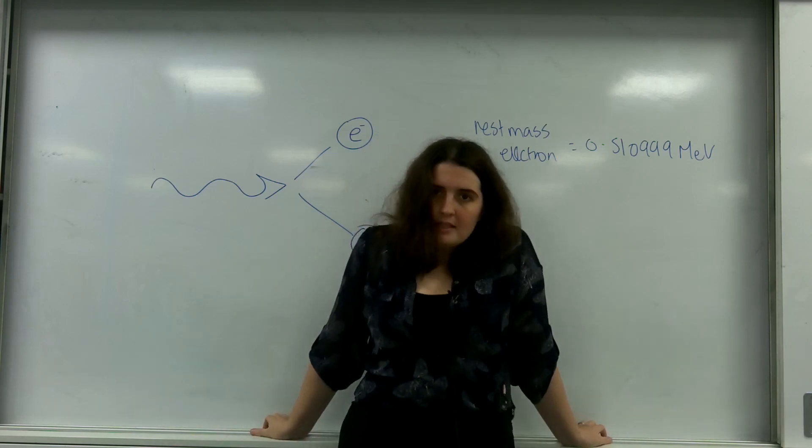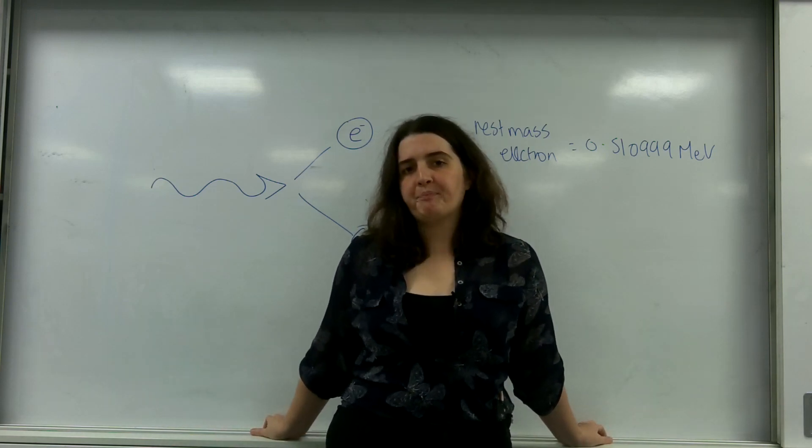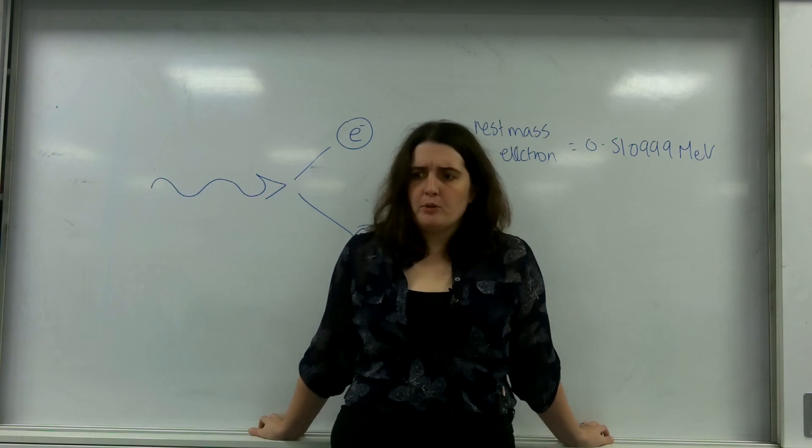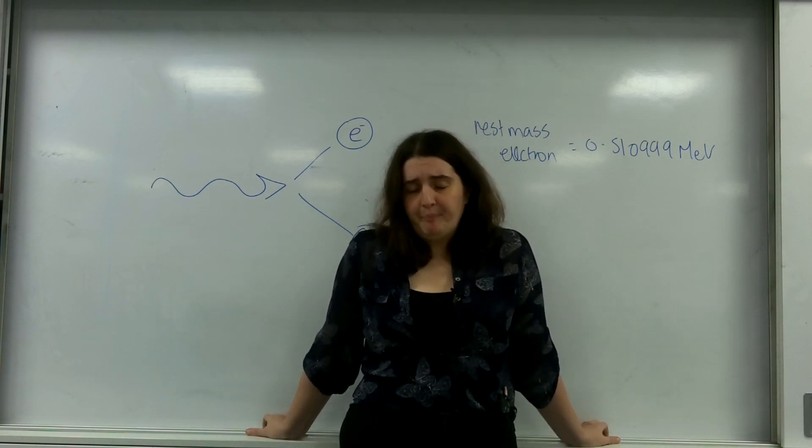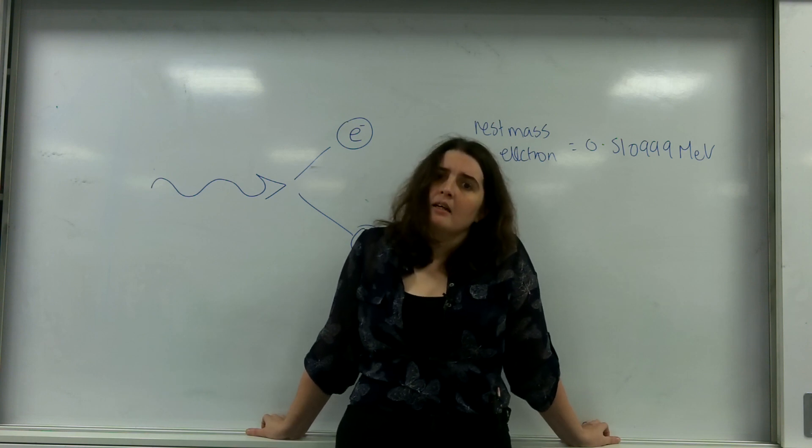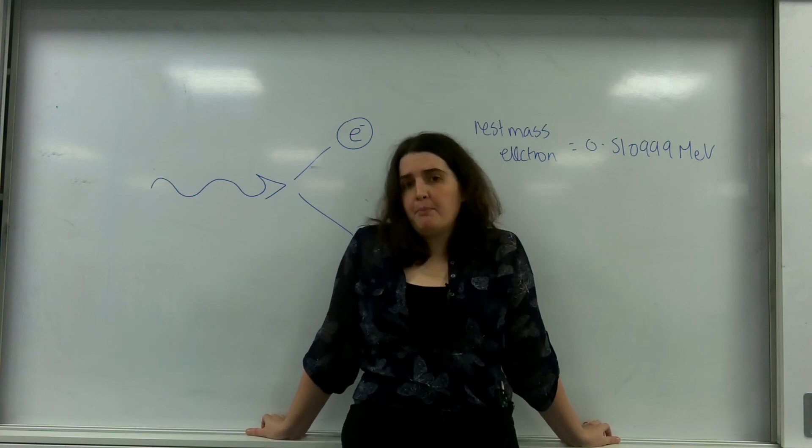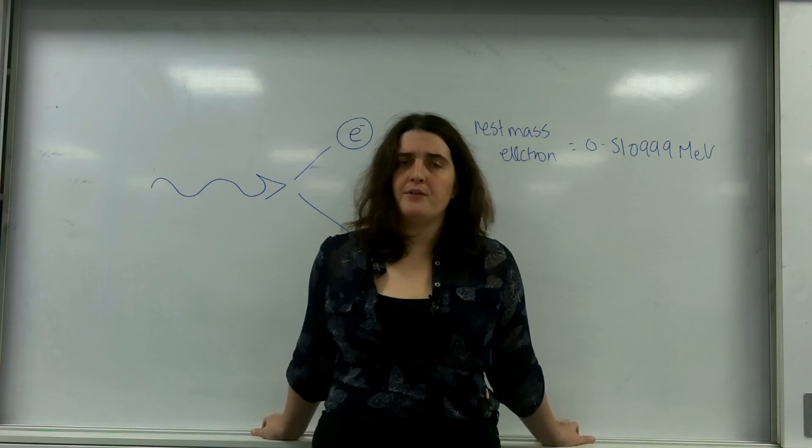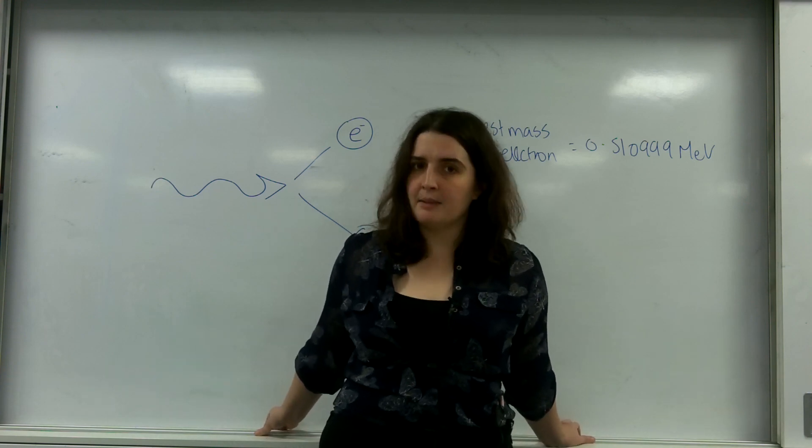Good evening and welcome to TL Physics. Today I'm going to talk about pair production. Pair production is a quantum phenomena where a photon of light converts its energy into mass. And more importantly, to conserve many parts of the universe, you have to create a particle and an antiparticle.